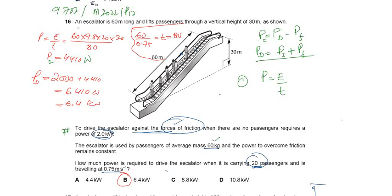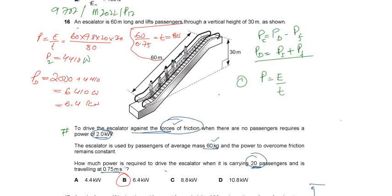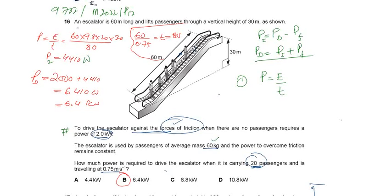An escalator is 60 meters long and lifts passengers to a vertical height of 30 meters as shown. So here is the lift used to lift the passengers to a height of 30 meters, and the length of the escalator is 60 meters.